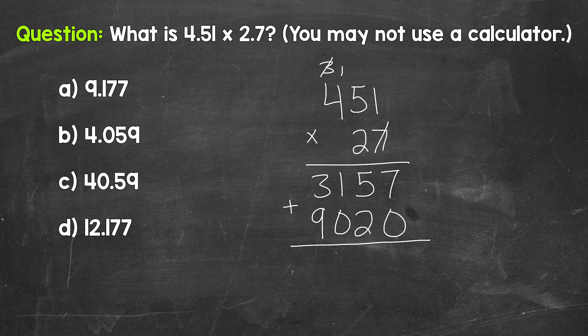And now we add. Seven plus zero is seven. Five plus two is seven. One plus zero is one. And then three plus nine is 12. So we end up with 12,177.